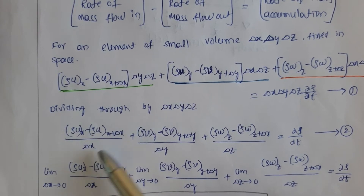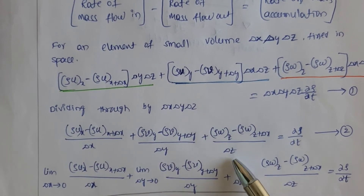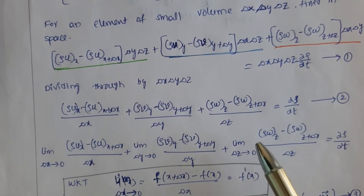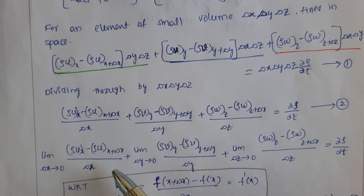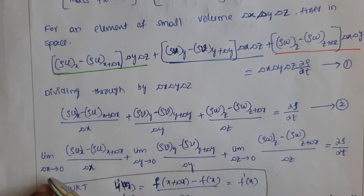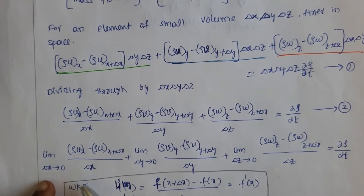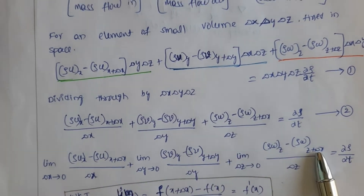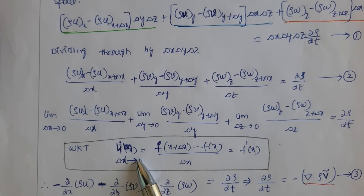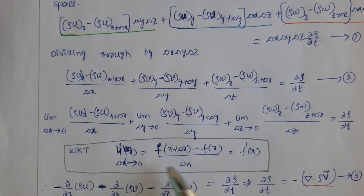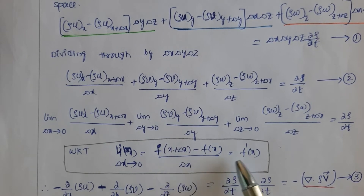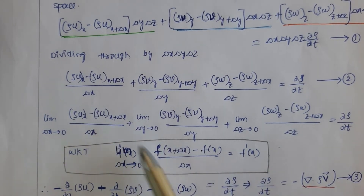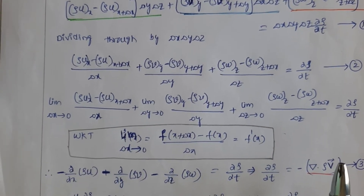By dividing the whole expression by delta x·delta y·delta z we get terms: one complete term in x, one in y, one in z, and d(rho)/dt. Since it is a small volume element, as delta x, delta y, delta z approach zero, the expression converts into differential form. We know that the limit as delta x tends to zero of [f(x + delta x) minus f(x)] divided by delta x is the differentiation of the function with respect to x.